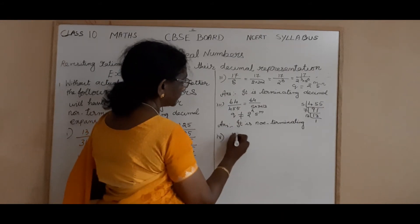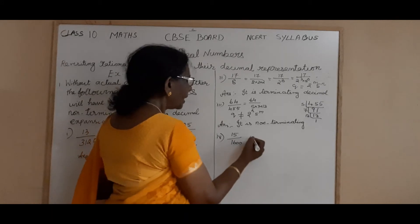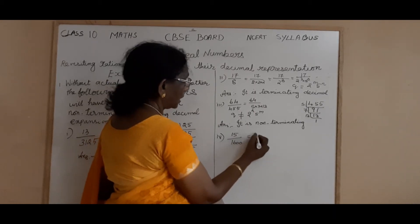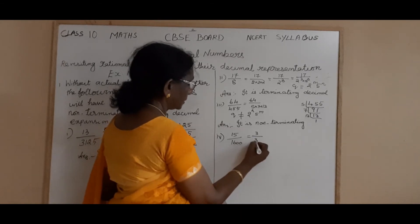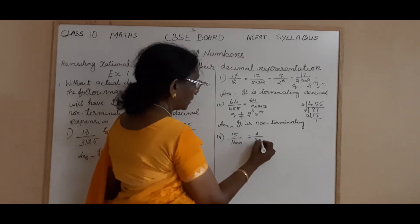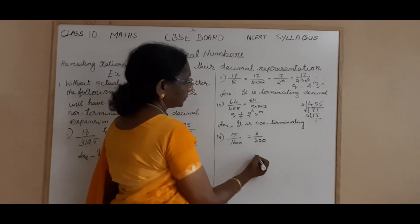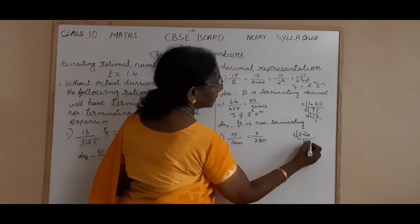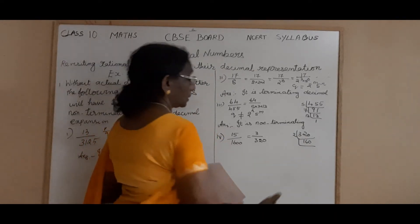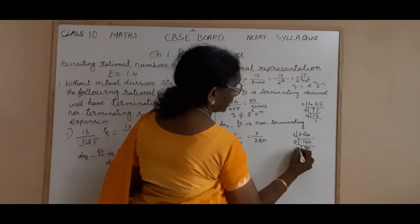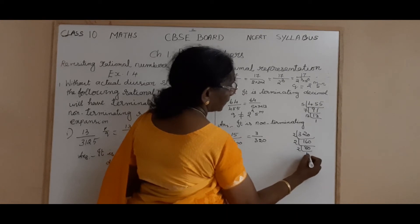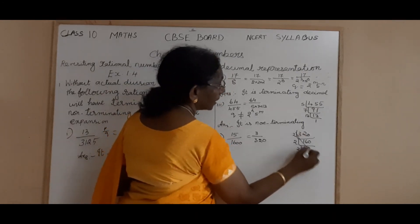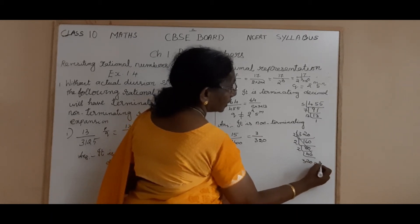Next, sum number 4: 15 by 1600. If you want, you can simplify first — 5 is the common factor. If you simplify, you get 3 by 320. Now factorize 320: 320 is equal to 32 into 10. And you know 32 is 2 to the power 5.